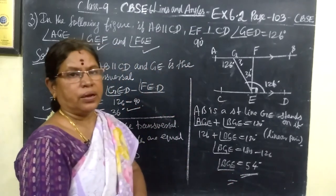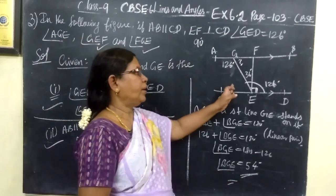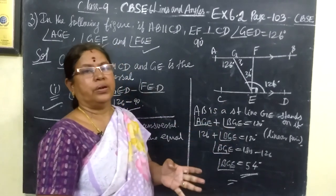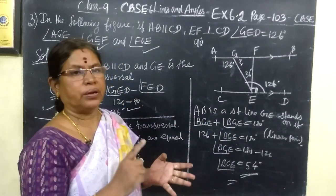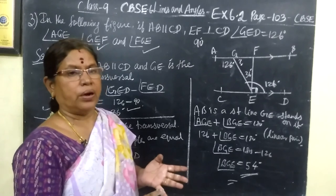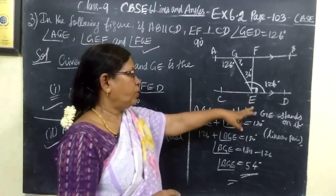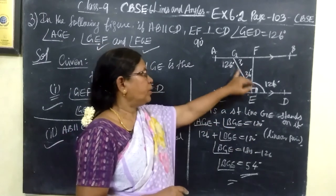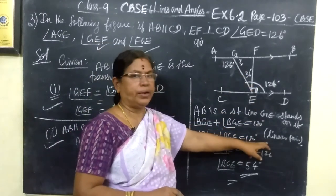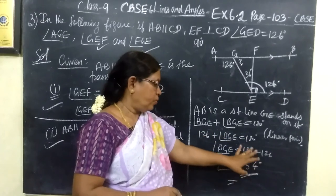So in this class to find the angles again we used the property alternate interior angles are equal and one more: sum of the adjacent angles on a straight line or linear pair is equal to 180 degrees.